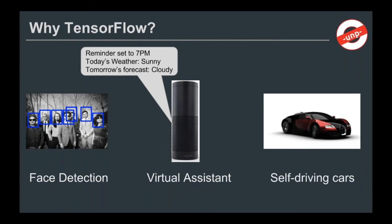You might have heard of Tesla. As of now, they're making rapid progress in the autopilot section. A lot of new companies are emerging, especially after Tesla laid the foundation for self-driving cars. These are cars embedded with sensors which are environmentally aware of their surroundings, and they can take automated actions based on those surroundings.